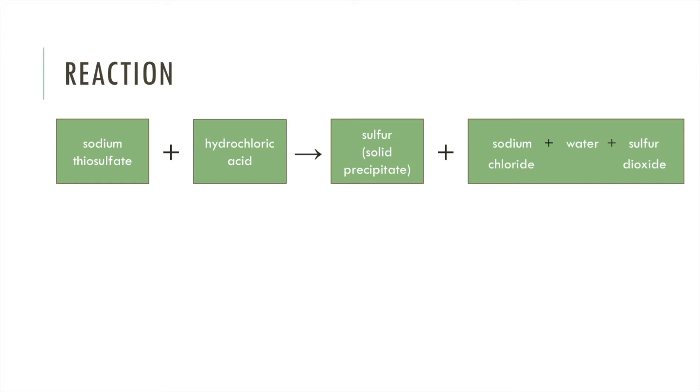The sulfur is formed as a solid precipitate, so what we'll see as more and more of it is produced is our resulting solution becoming more and more cloudy until eventually the cross that we've placed underneath is no longer visible.